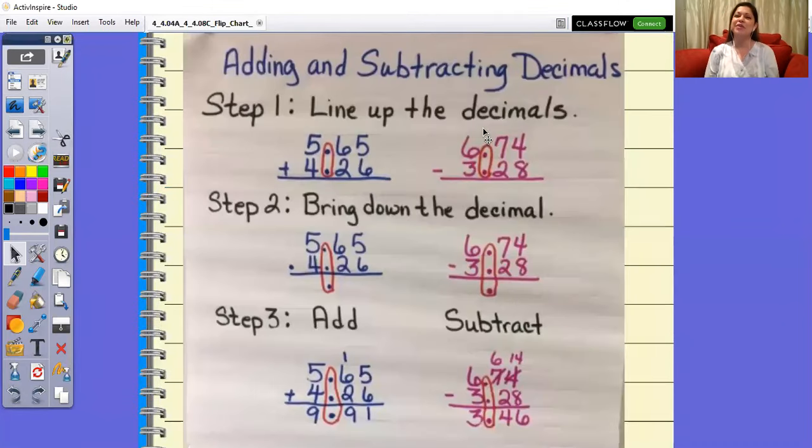Whenever we're adding and subtracting decimals, sometimes the numbers are not lined up for us ready to add or subtract, so we as fourth graders have to know how to do that. Step one is to line up the decimals, whether you're adding or subtracting. Step two is to bring down the decimal - that's the first thing you want to do so you don't forget. Then you either add the numbers or subtract them the way you normally would. Those are our steps and strategies for adding and subtracting decimals.